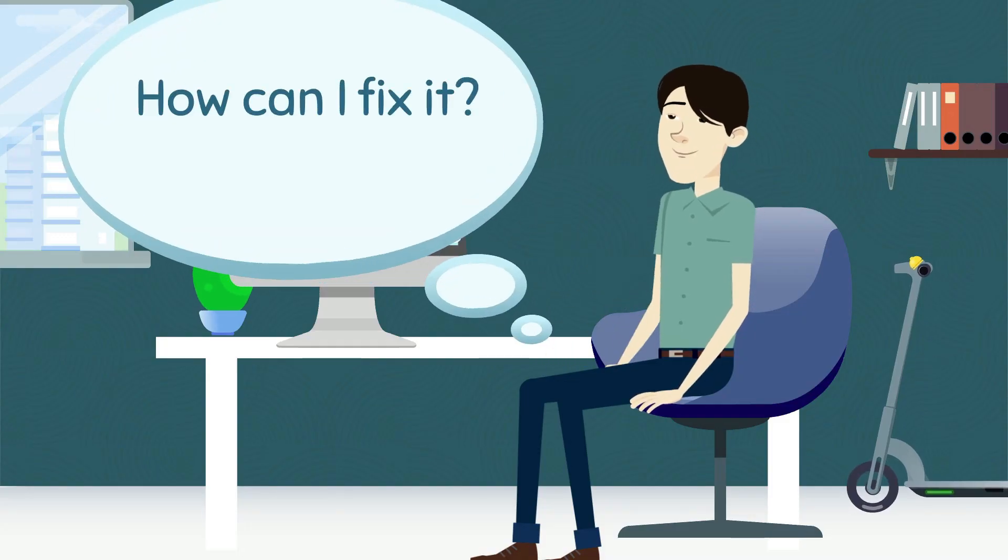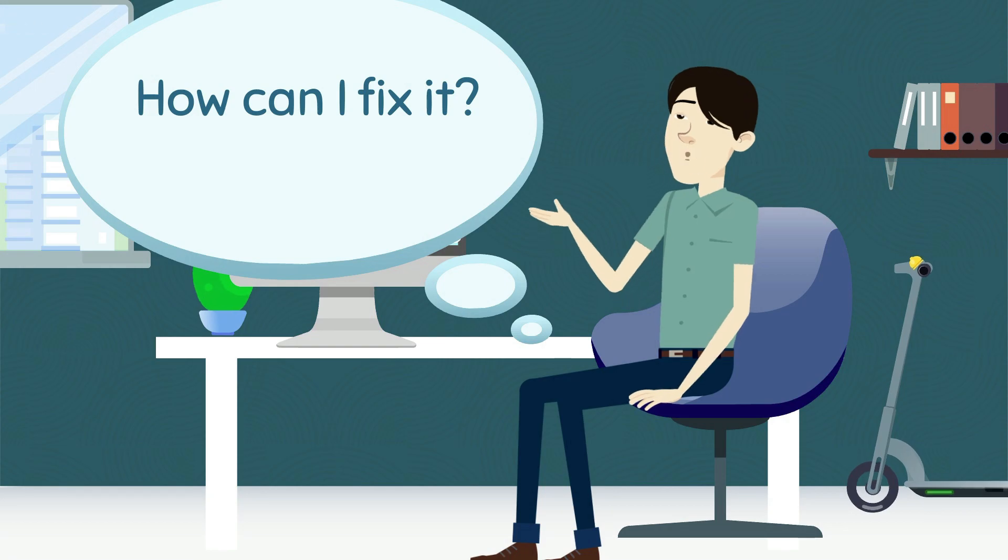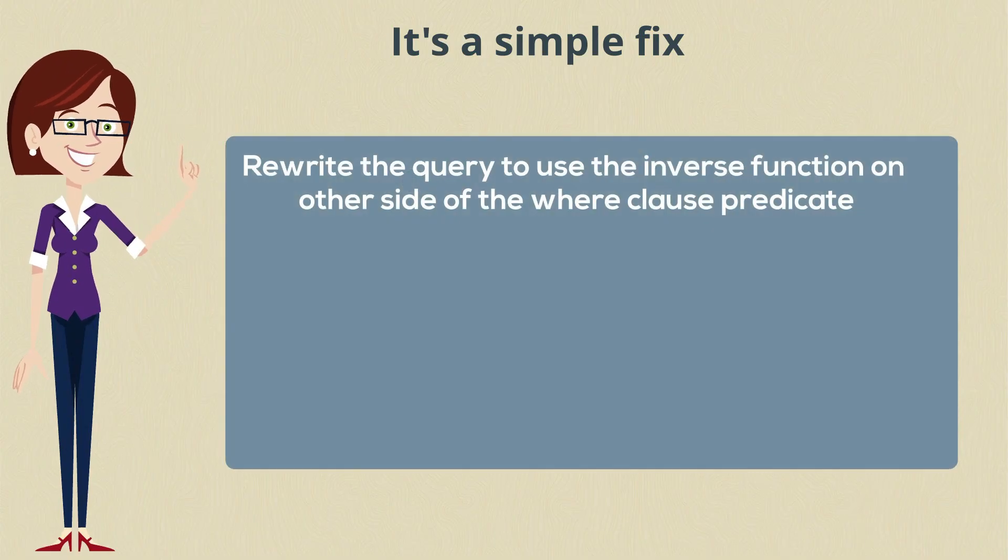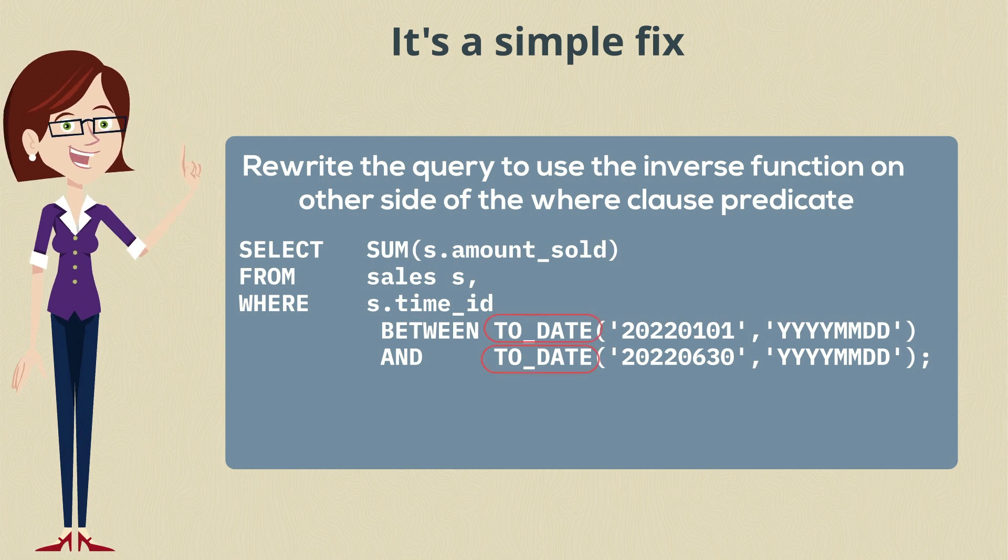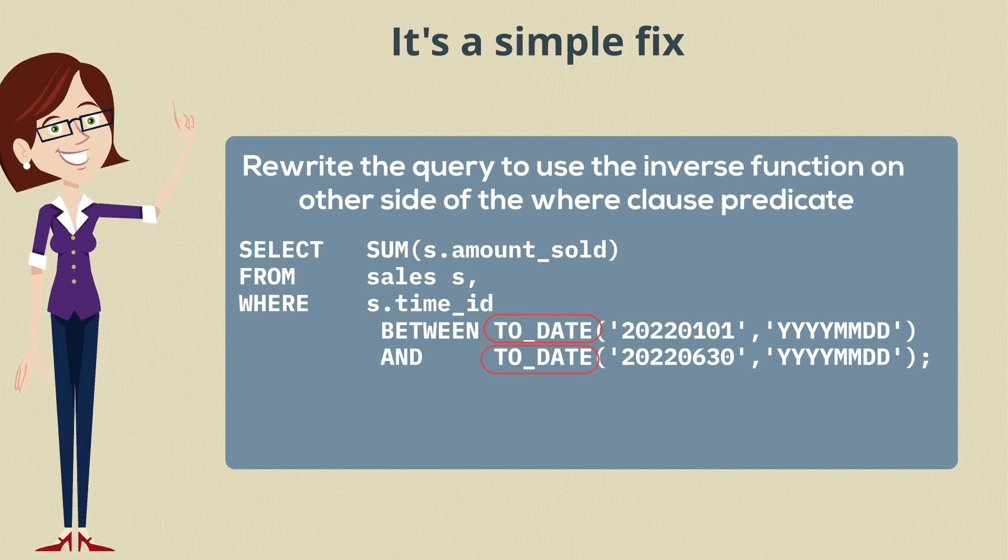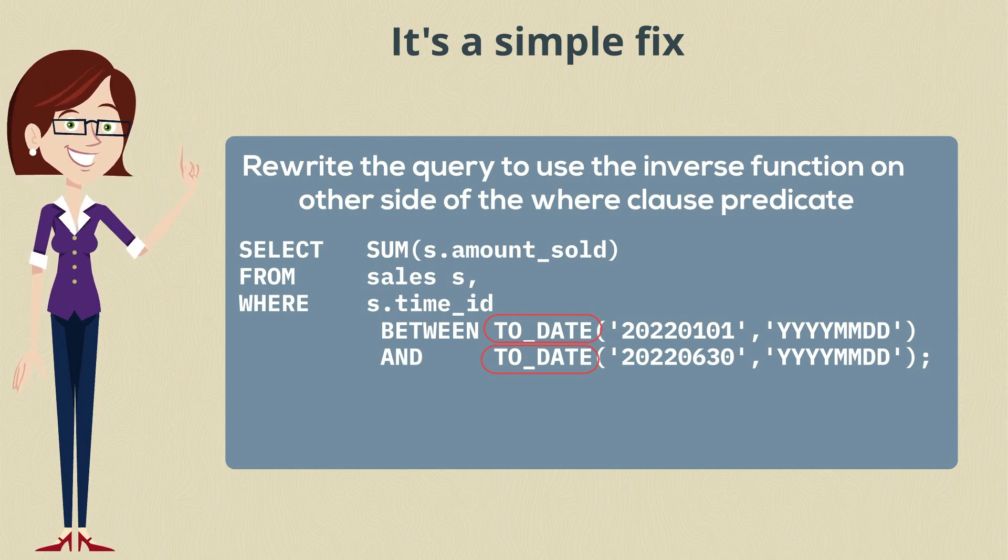So how can I fix this type of problem? Well, the good news is it's a simple fix. You want to rewrite the query to use the inverse function on the other side of the where clause predicate. So instead of doing a to_char on the time_id, do a to_date on the string so that we can do a proper date comparison. That will allow us to be able to get the partition pruning we want.